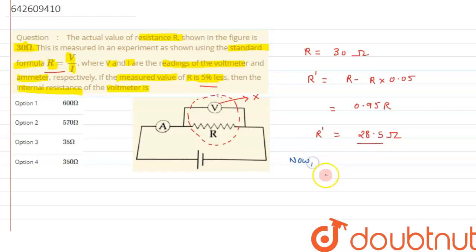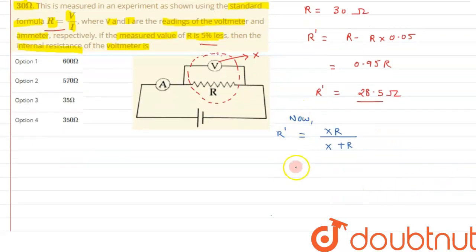So we can write now X and R both are in parallel, so their equivalent can be written as R prime equals to X into R upon X plus R. From here we can say the value of R is 30 and R prime we have calculated it as 28.5. So on solving this value we can get the value of X as 570 ohms.